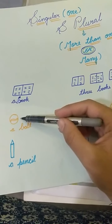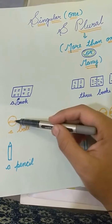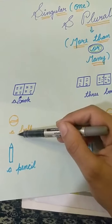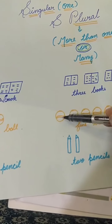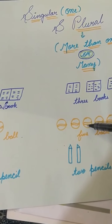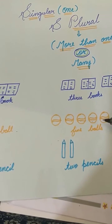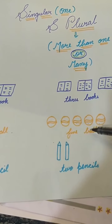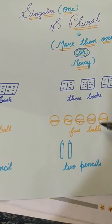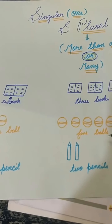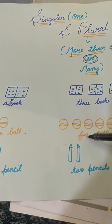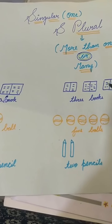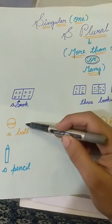Now we are talking about a ball — kitni ball dikh rahi hai? Ek hi ball. Yes or no? So in this picture you can see only a ball. Ab ball count karenge: one ball, two ball, three ball, four ball, five balls — to ball ke saath S add kar diya. This is more than one, so this is plural and this is singular.